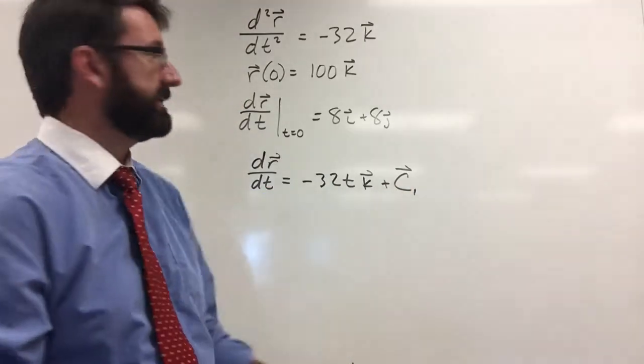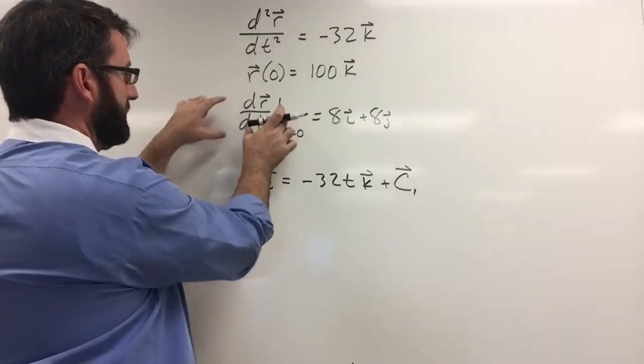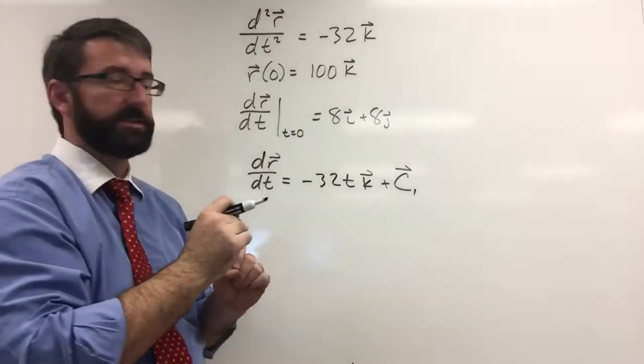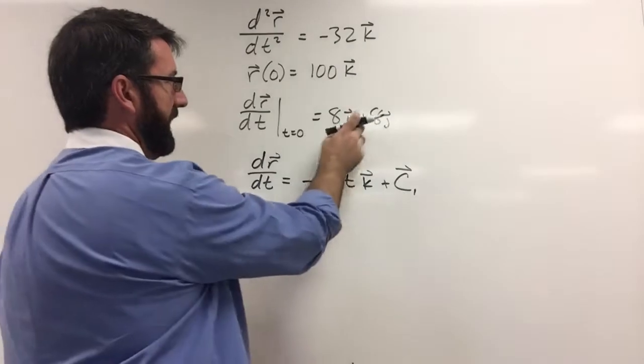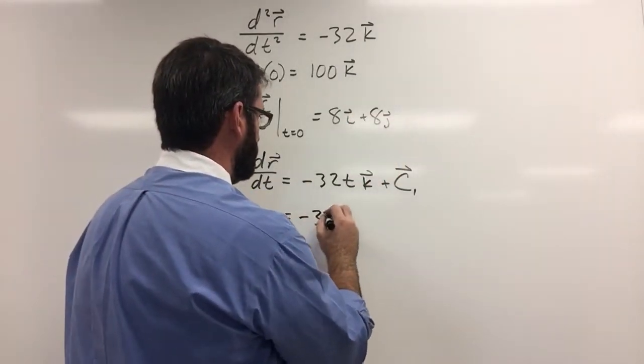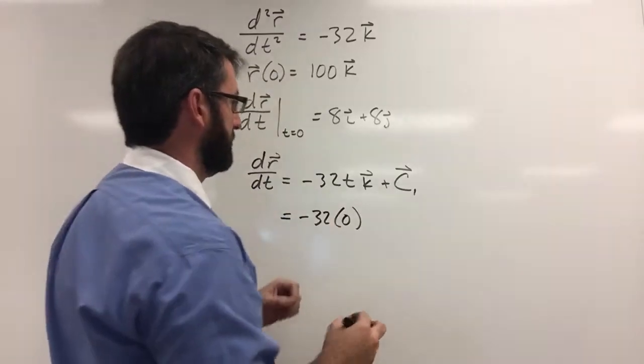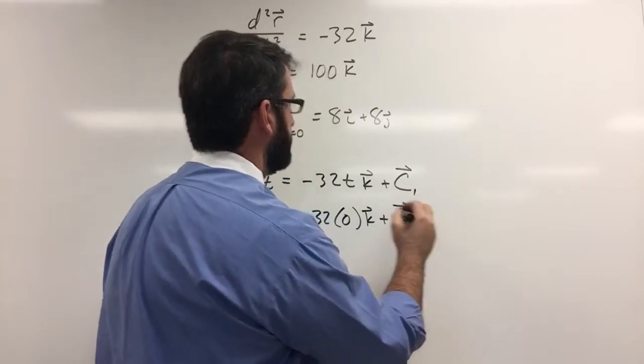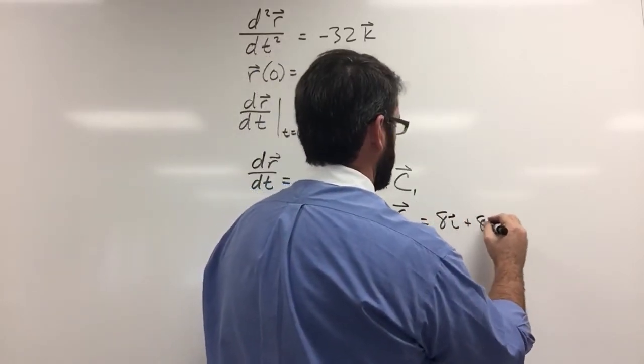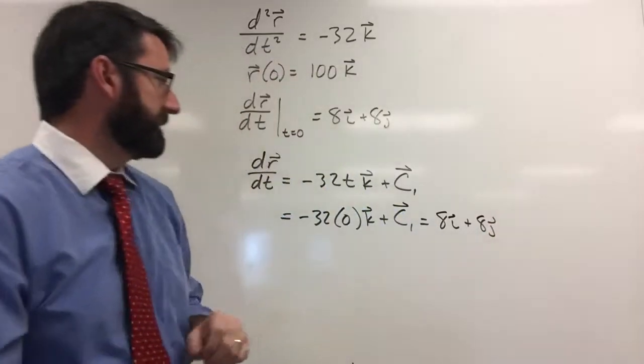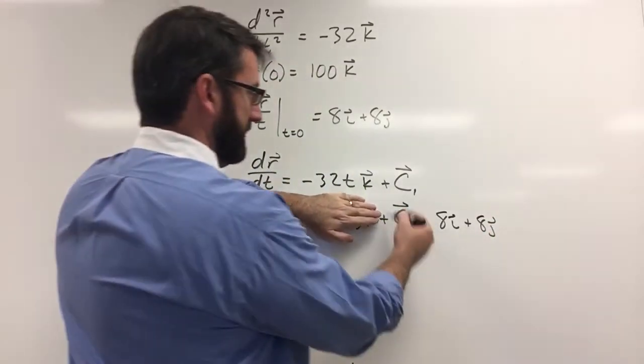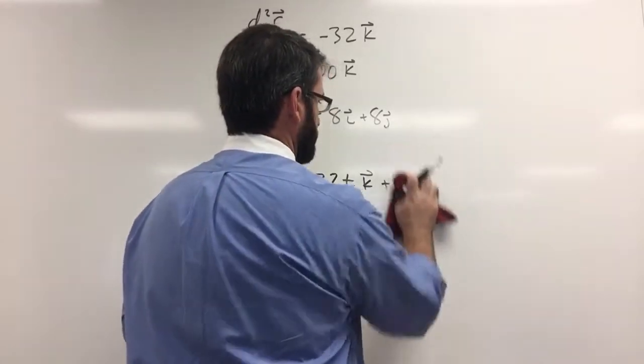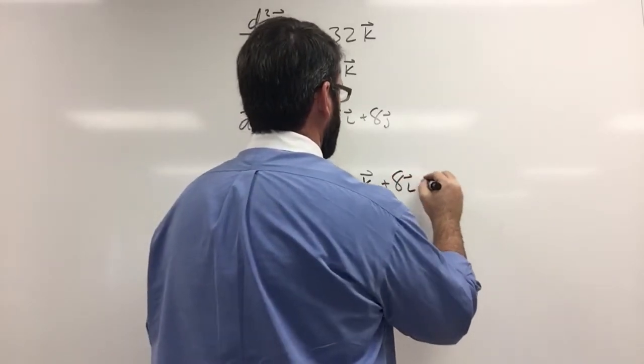Now we can figure out what c1 is because we're told that this derivative, dr dt evaluated at t equals 0, is going to be equal to 8i plus 8j. So negative 32 times 0, we just plug in 0 for t, k plus c1 is equal to 8i plus 8j. So you can see that this is just going to be 0, so we get that this constant vector is just 8i plus 8j. So let's go ahead and replace this c1 with 8i plus 8j.